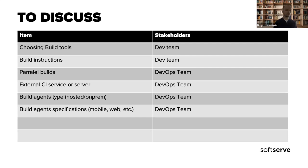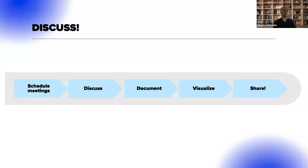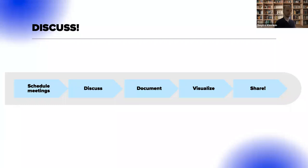We also need to think about build agent specifications — what software and packages need to be installed. To be aligned with the architectural process, we need to schedule meetings, discuss these things with relevant people in advance, document and visualize it — build some diagrams showing how we'd structure the Git flow, the build flow, and so on.